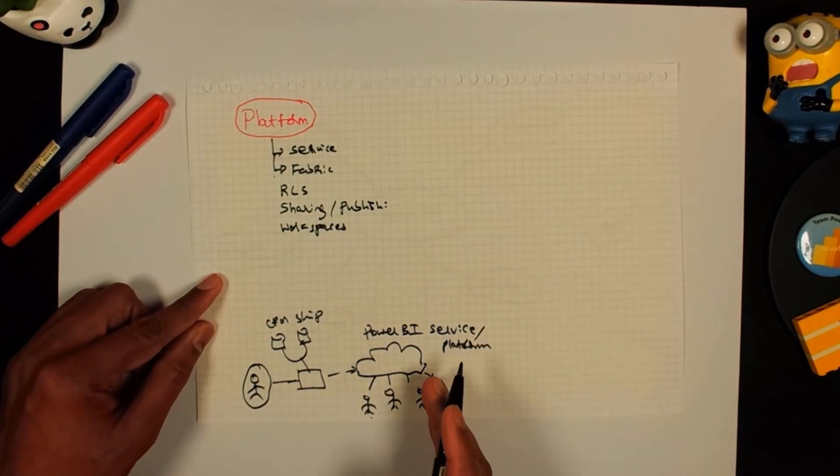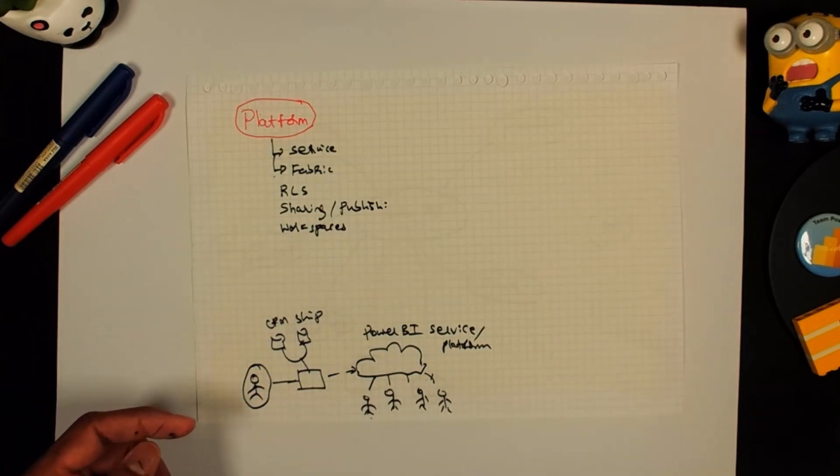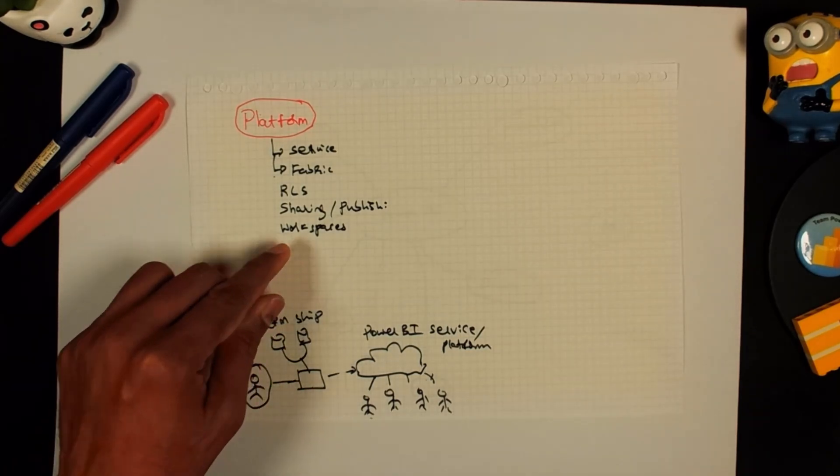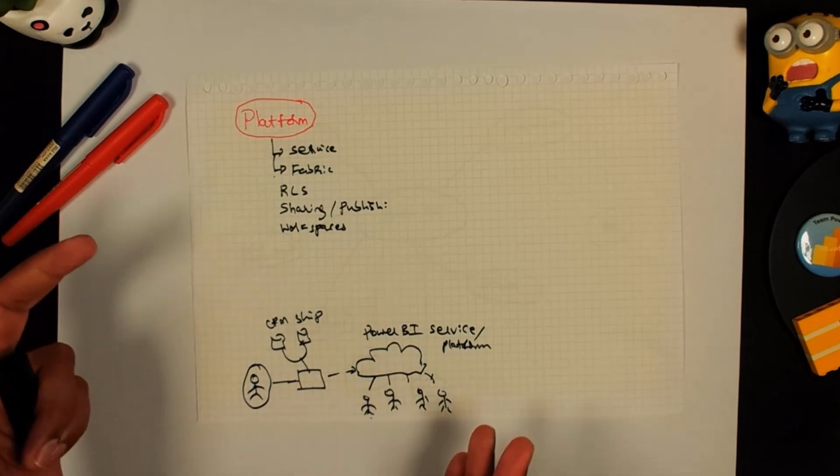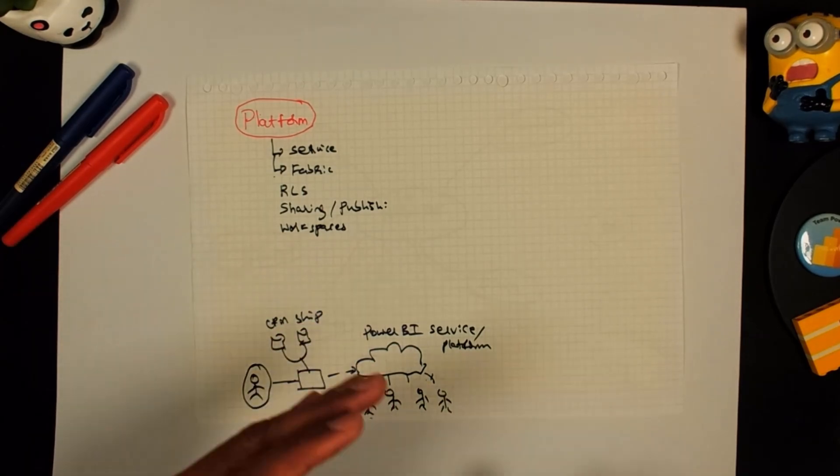Workspaces are technically like folders where all your reports are organized. Usually in a typical organization, there might be hundreds of reports. And if you just list all of them in one place, then it gets tedious. So you maintain workspaces, one for finance reports, one for HR reports, one for sales dashboards like that. And then inside you put stuff.